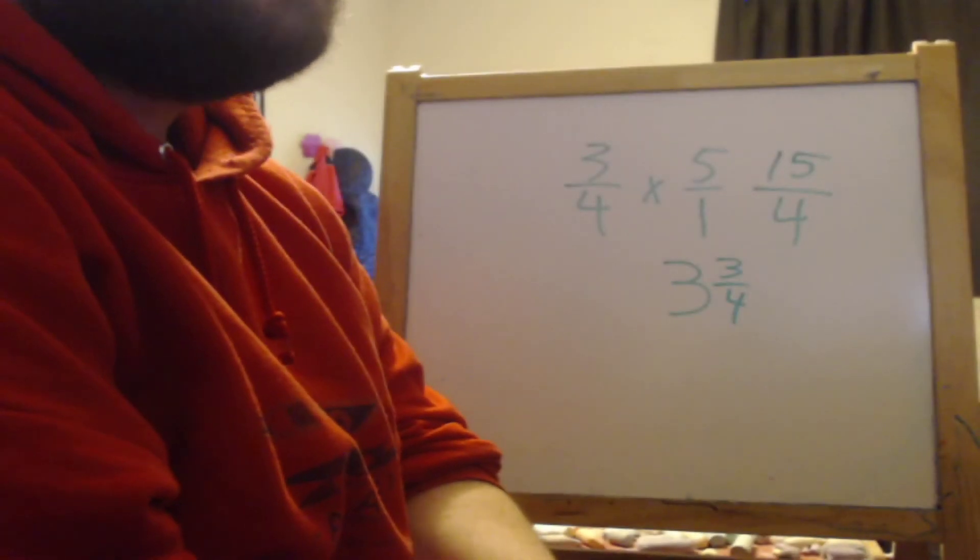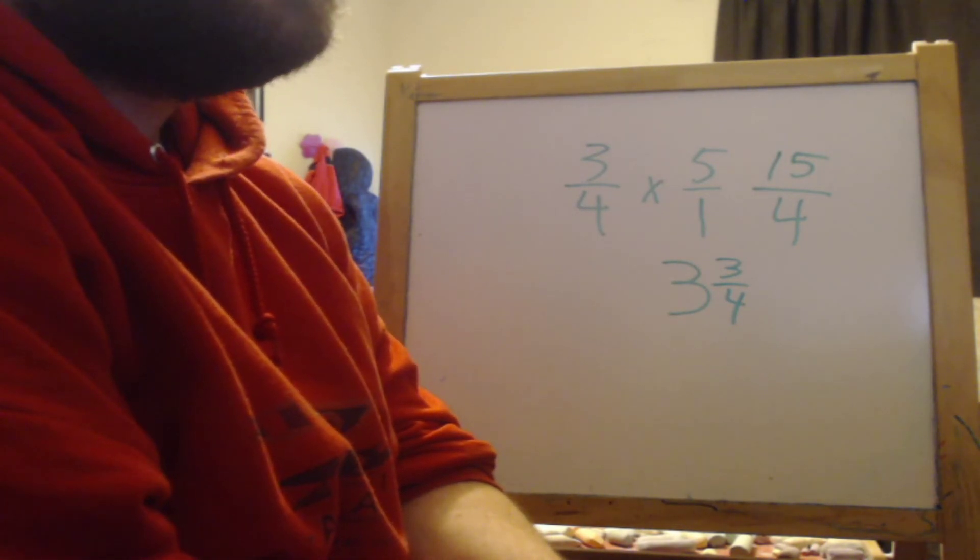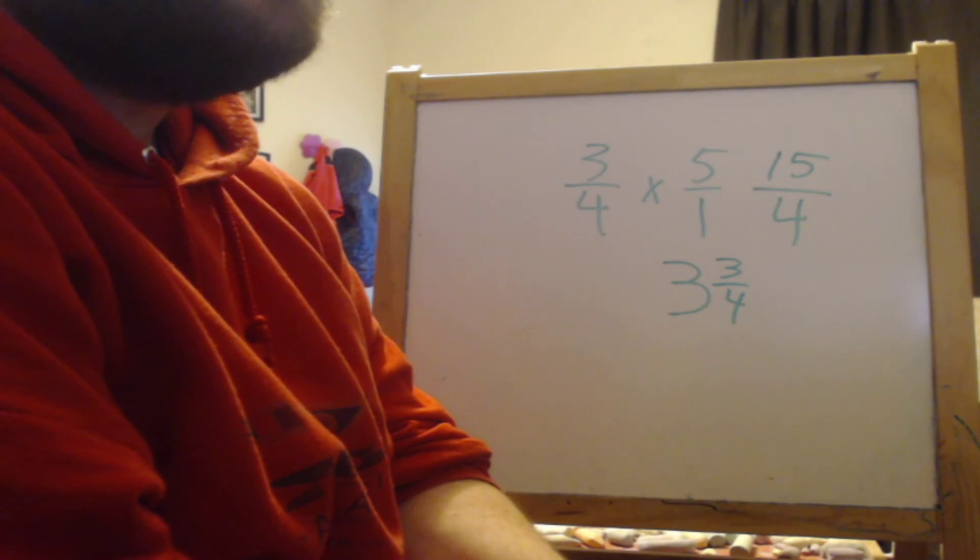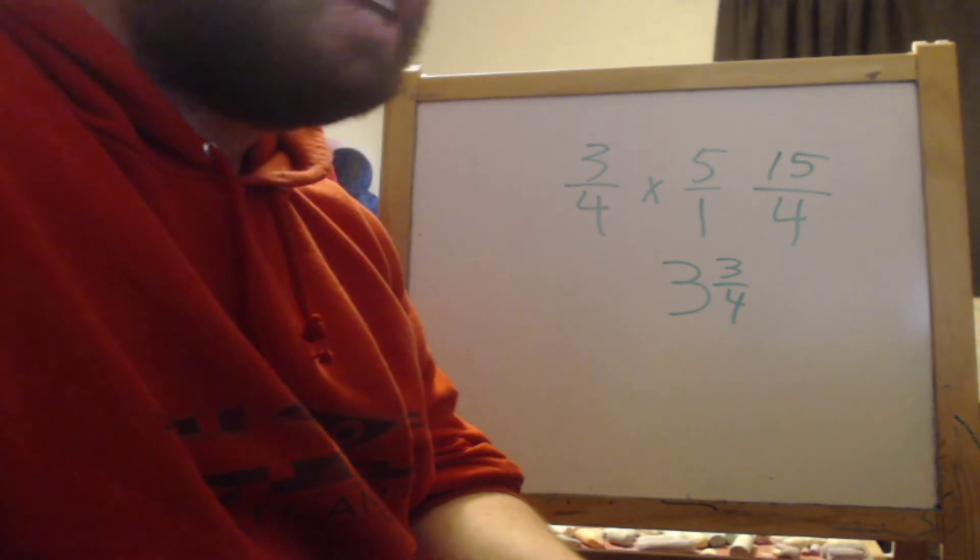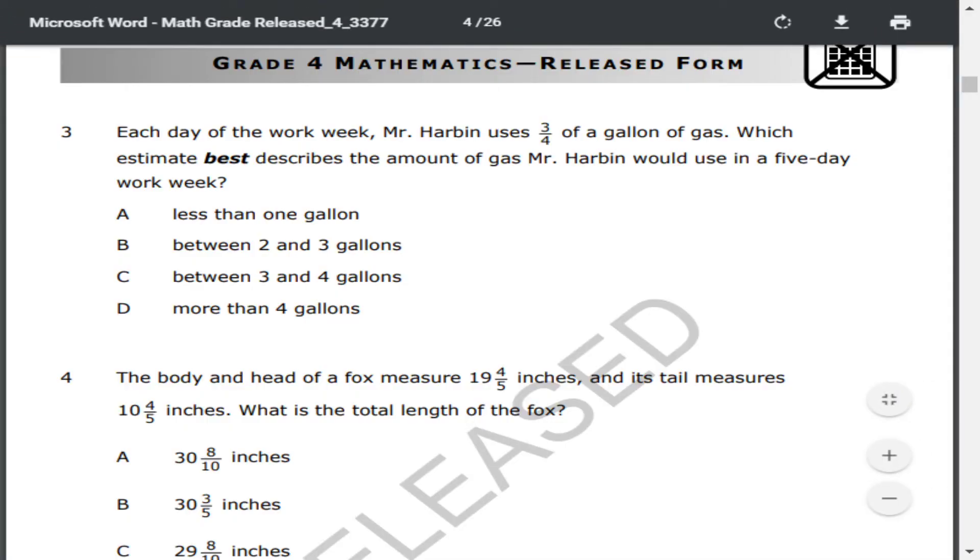So I would say which estimate best describes the amount of gas Mr. Harbin would use in a five-day work week? Well, the answer is three and three-fourths. So it would have to be C, between three and four gallons.